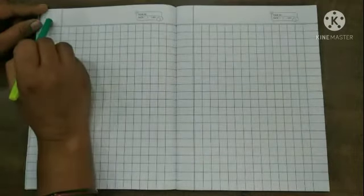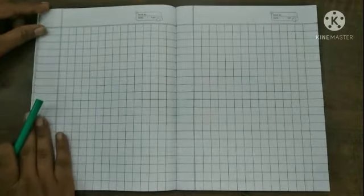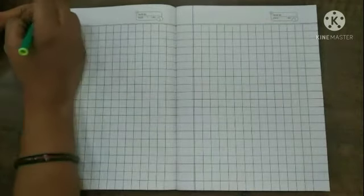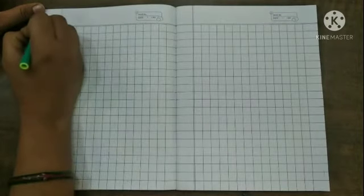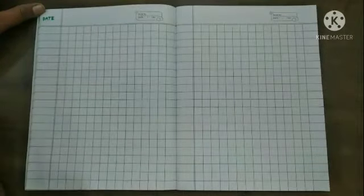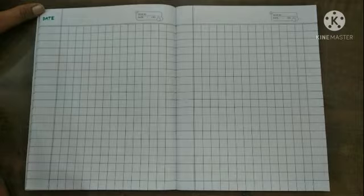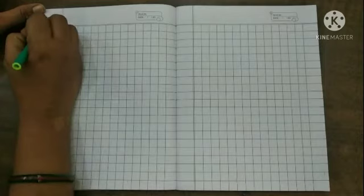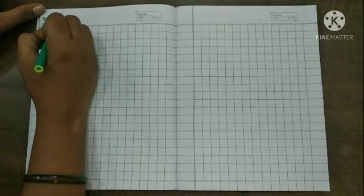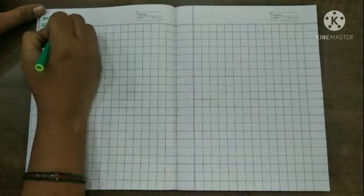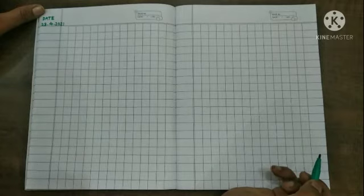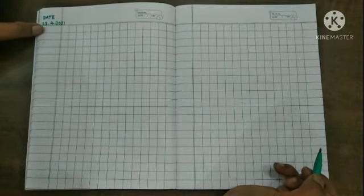This is your left side of the page and this is right side of the page. So first you write here date, D-A-T-E, date. What is date today students? Today is 23rd, 2-3 dot 4 dot 2-0-2-1, 23rd April 2021.